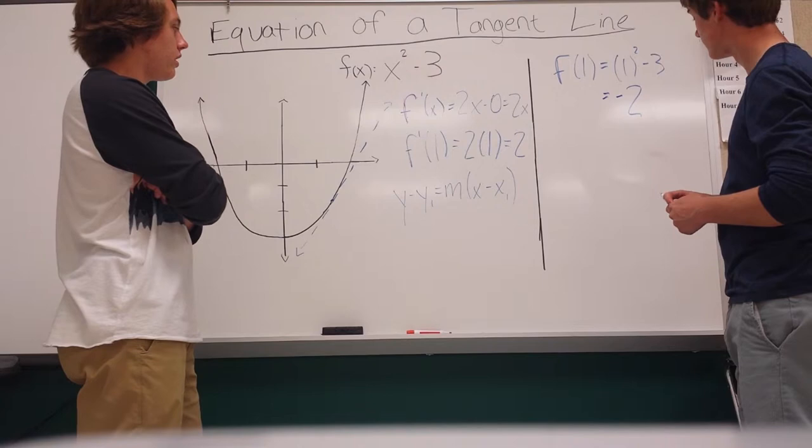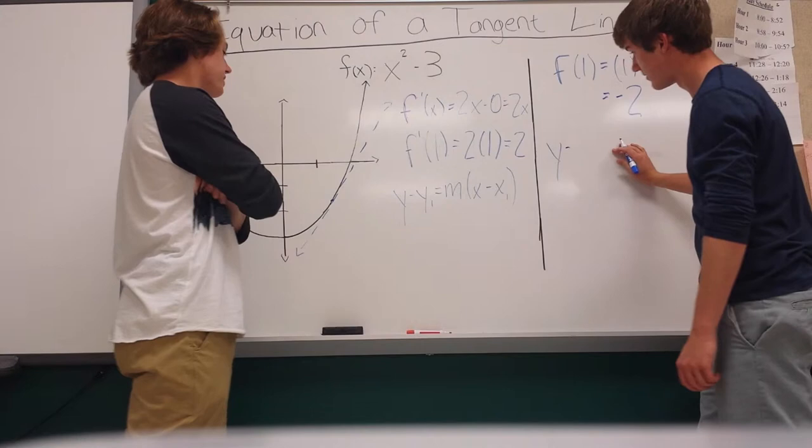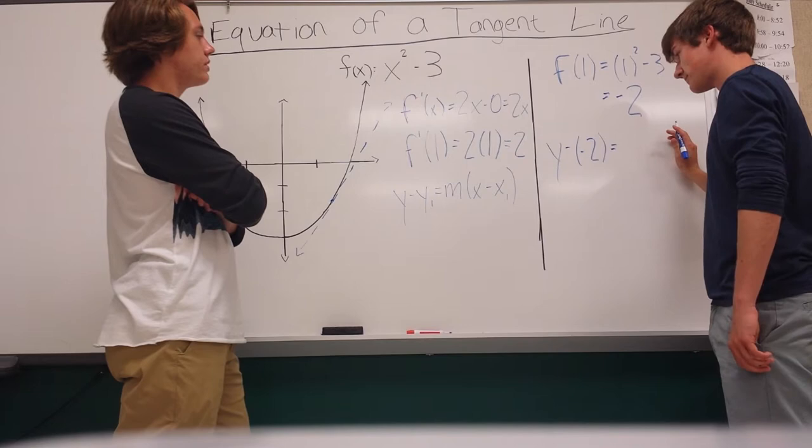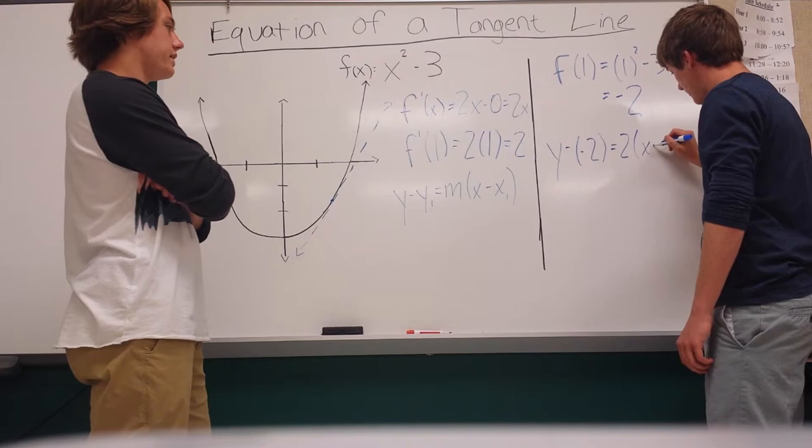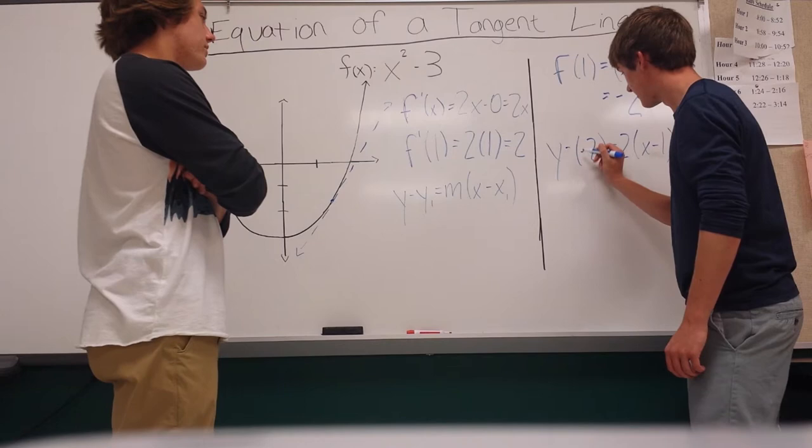So now we'll have to substitute all our points in. So right here, we found the point x equals 1, y equals negative 2. So we'll plug in the negative 2. So y minus negative 2 equals our slope, which is 2, times x minus 1.